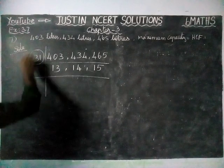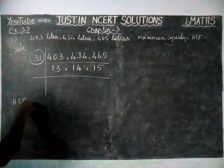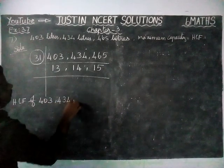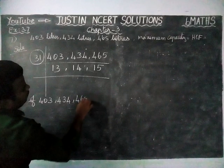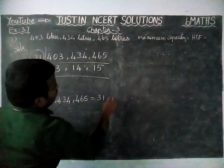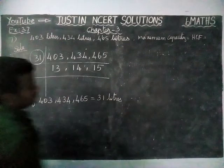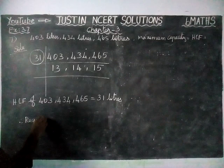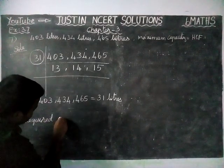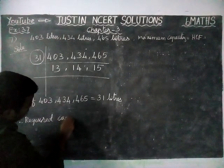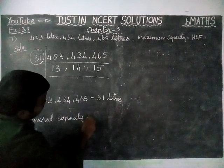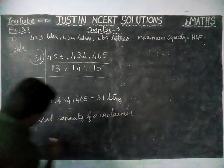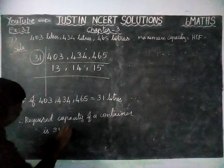So the HCF of the given values — HCF of 403, 434 and 465 — is equal to 31 litres. Therefore, the required capacity of the container is 31 litres.